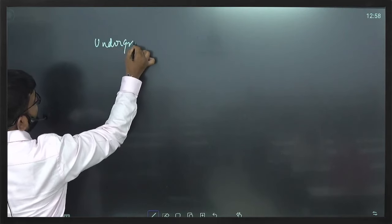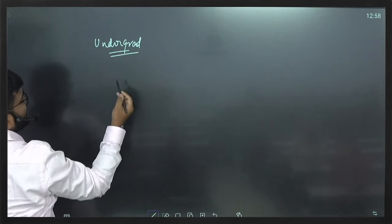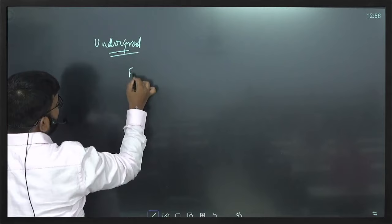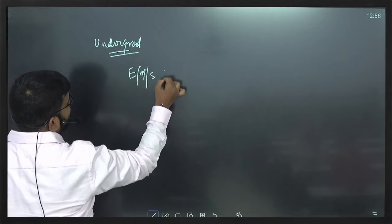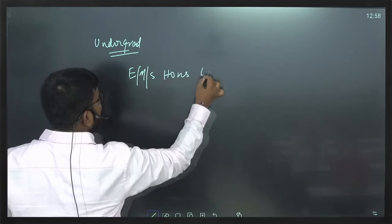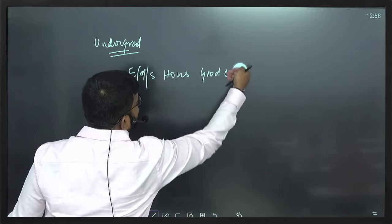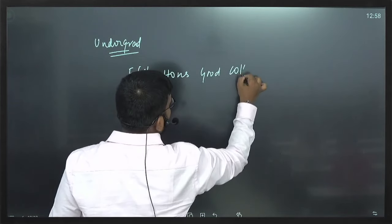Which undergraduate degree can we do along with actuarial science? Generally, recruiters look for economics, maths, stats honors from a good college. So basically, this is something where I differ from others - from a good college.